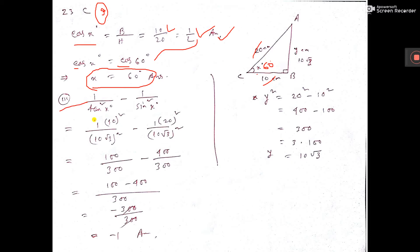Now we have to find this one: 1 by tan square x degree, 1 by sin square x degree, this one. So put the value of tan. Tan means what? Perpendicular by base.